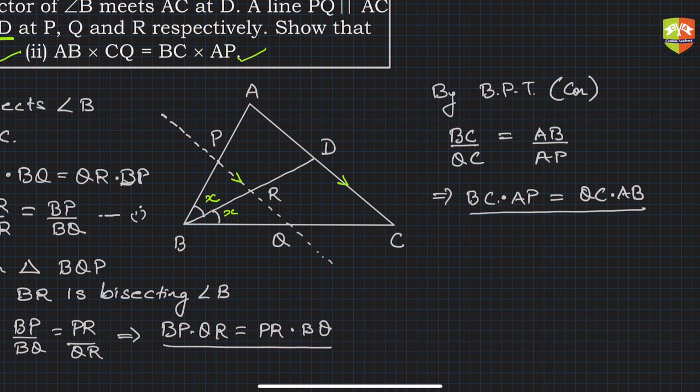Hence the second result is proved. Note that the RHS and LHS are simply swapped from the given condition: AB × CQ = BC × AP. Hence proved.